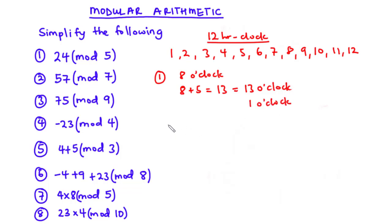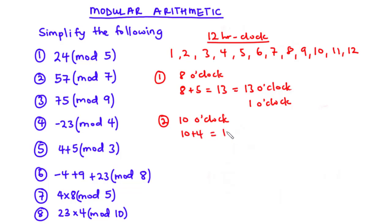Case two: assuming it is 10 o'clock now, what will be the time in four hours? We add 4 to 10 and get 14, so we say that the time is 14 o'clock. However, the clock displays 2 o'clock.